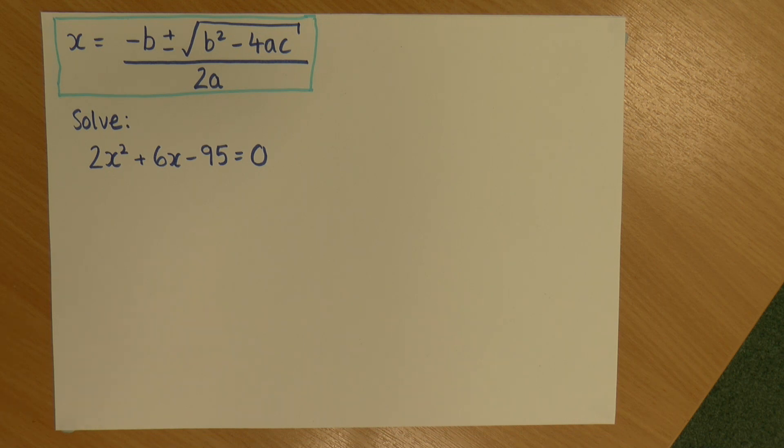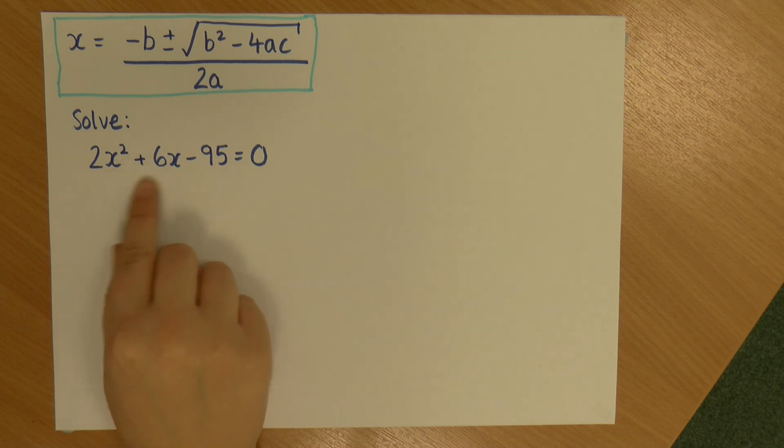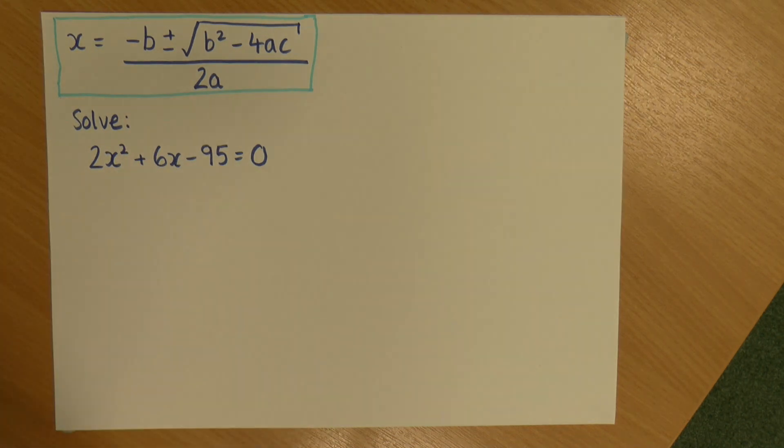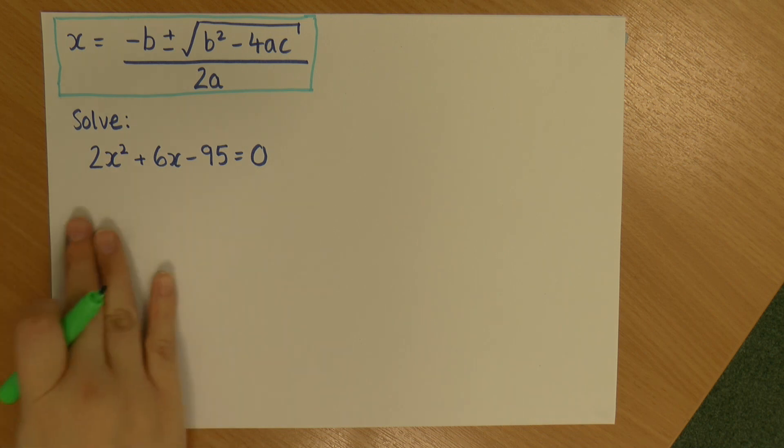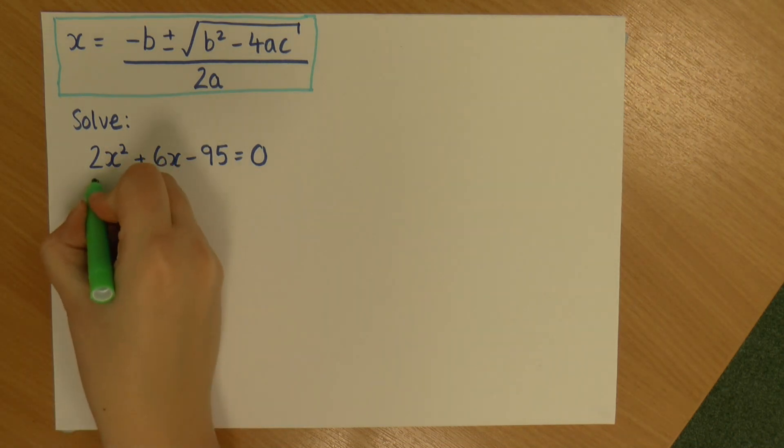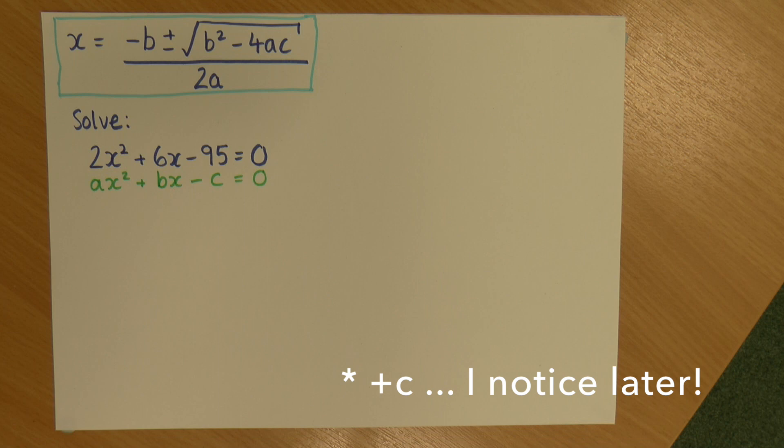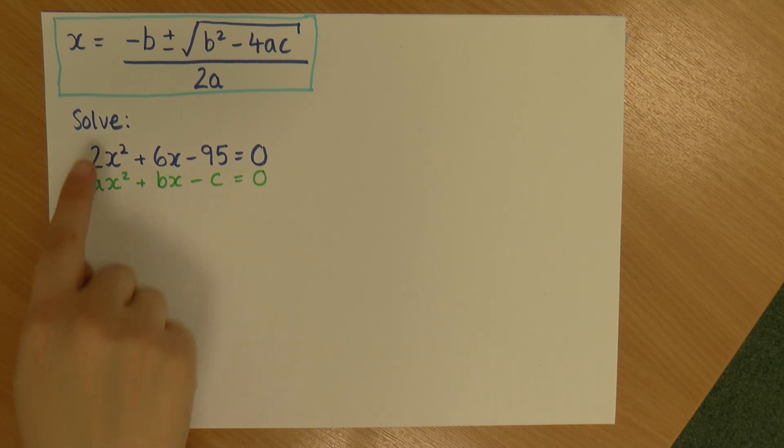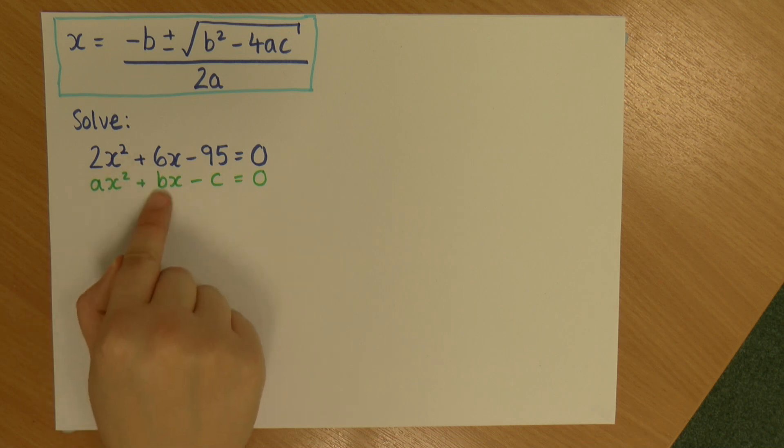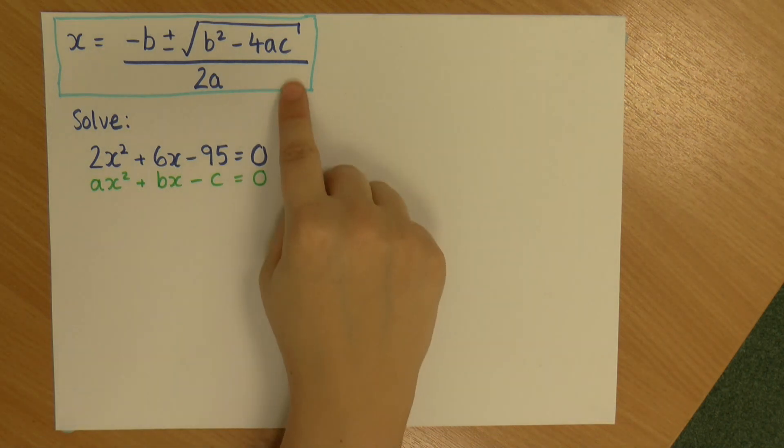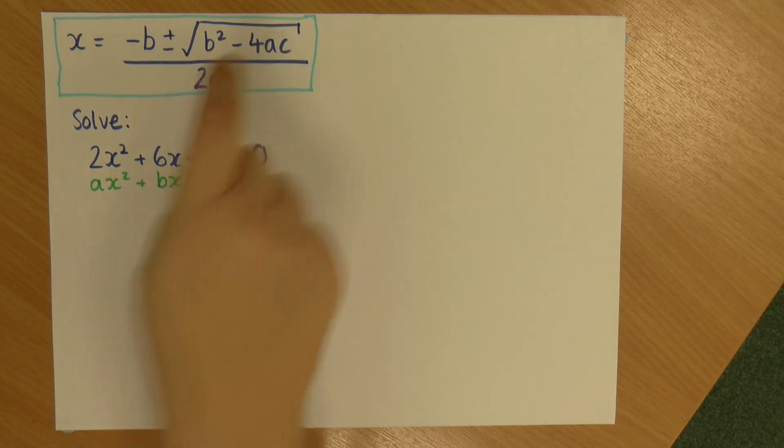So let's have a look at what we've got. 2x squared plus 6x minus 95 equals 0. It's worth bearing in mind that all quadratic equations follow a similar format that looks like ax squared plus bx minus c equals 0. So we can identify values for a, b and c using this knowledge. And as you may have already spotted, the quadratic formula has a's, b's and c's in it.